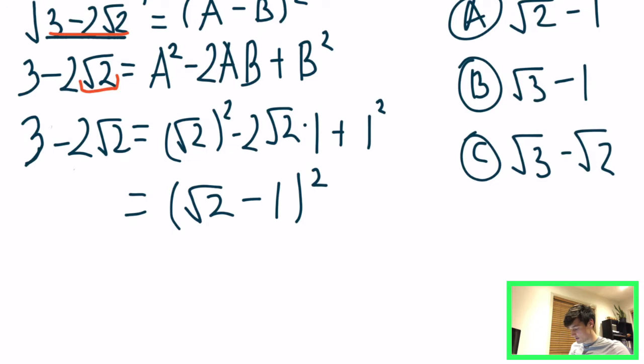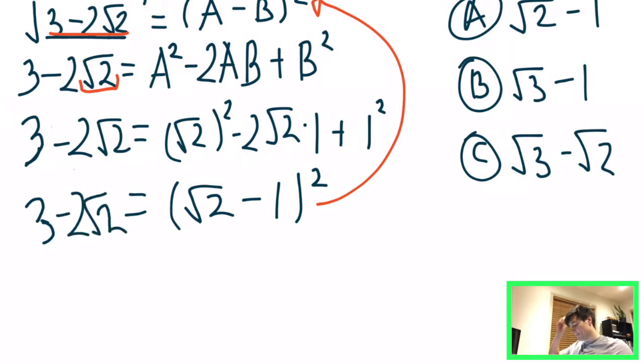So we can combine that. So we can see that that is equal to root 2 minus 1 all squared. All right. So that comes back to here. All right. And then this carries through 3 minus 2 root 2.